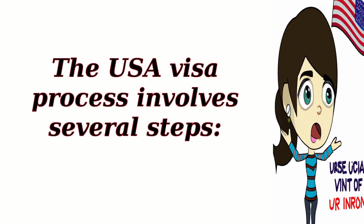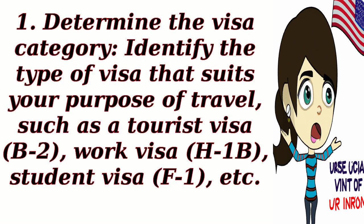The USA visa process involves several steps. 7. Determine the visa category. Identify the type of visa that suits your purpose of travel, such as a tourist visa (B2), work visa (H-1B), student visa (F-1), etc.